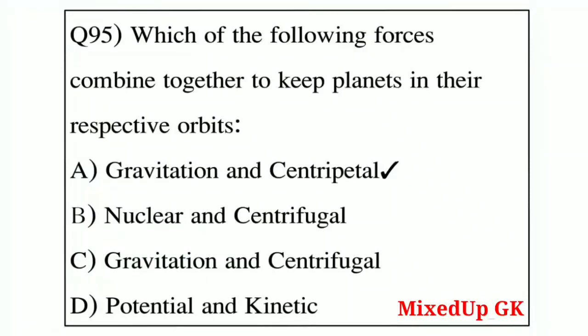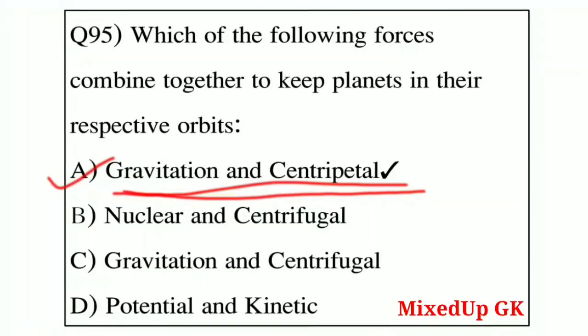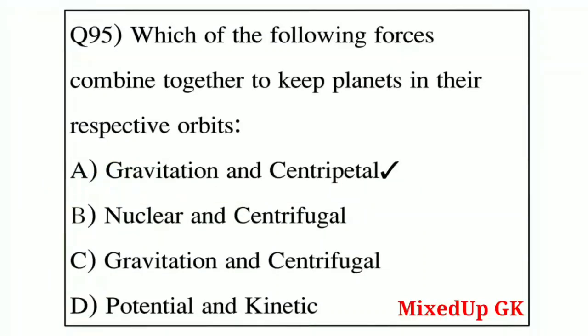Question number 95: which of the following forces combine together to keep planets in their respective orbits? Option A: gravitational and centripetal force, Option B: nuclear and centrifugal force, Option C: gravitational and centrifugal force, Option D: potential and kinetic force. The answer is Option A — gravitational and centripetal force.